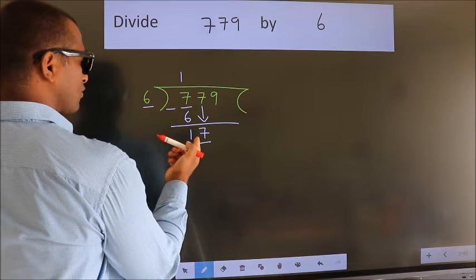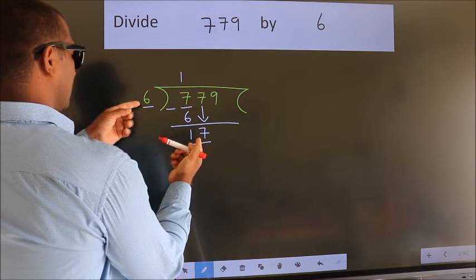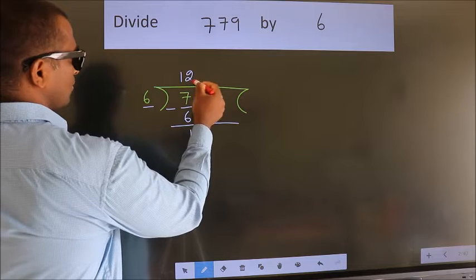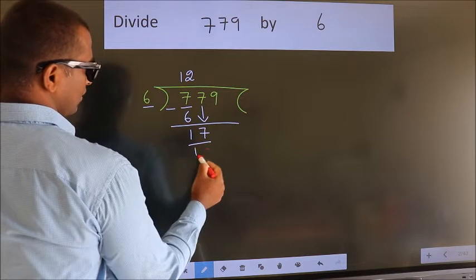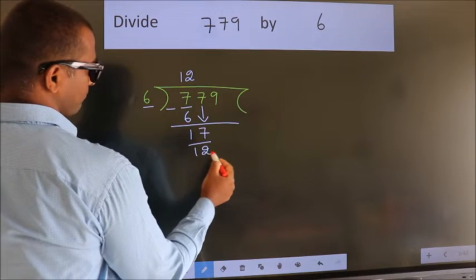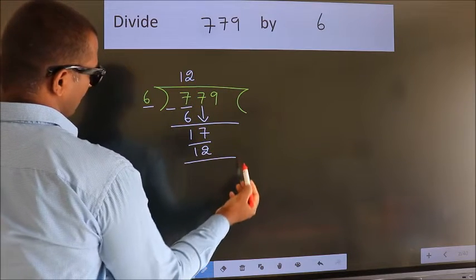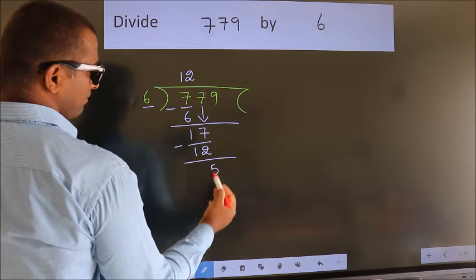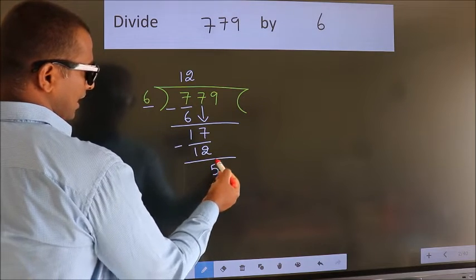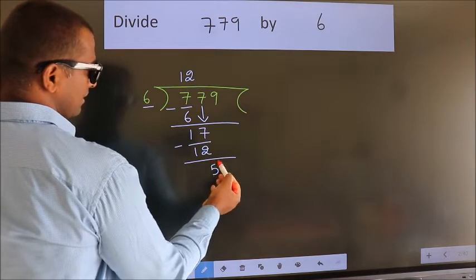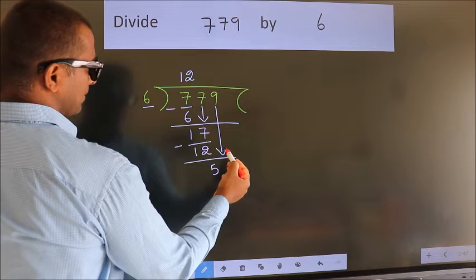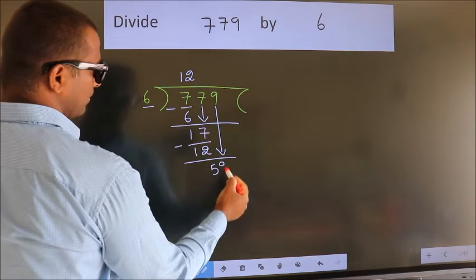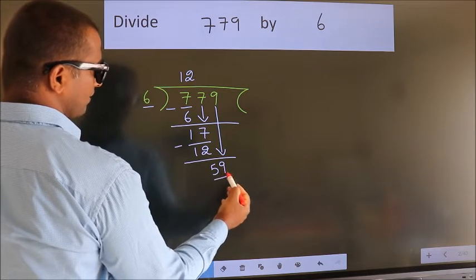A number close to 17 in the 6 times table is 6 twos, which is 12. Now we subtract and we get 5. After this, bring down the beside number. So 9 comes down, giving us 59.